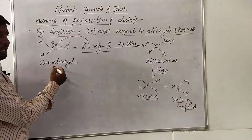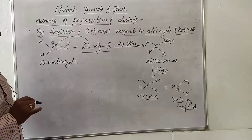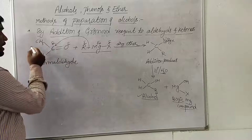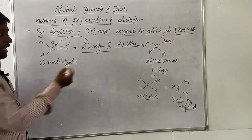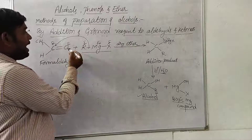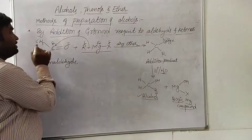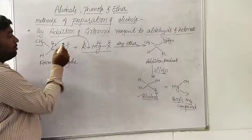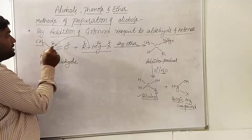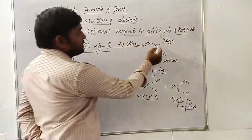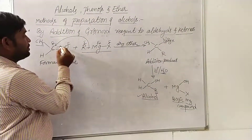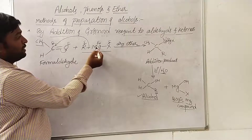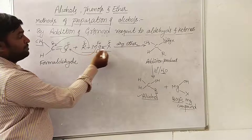For another example, instead of formaldehyde you can take acetaldehyde. The formula for acetaldehyde is CH₃CHO. The addition of Grignard reagent to acetaldehyde follows the same procedure. Instead of H on the aldehyde carbon, we now have CH₃. Addition of alkyl group R takes place, and one lone pair of electrons shifts onto the oxygen atom. This makes the oxygen electronegative, so the electropositive magnesium attacks the oxygen atom and forms the O–MgX bond.